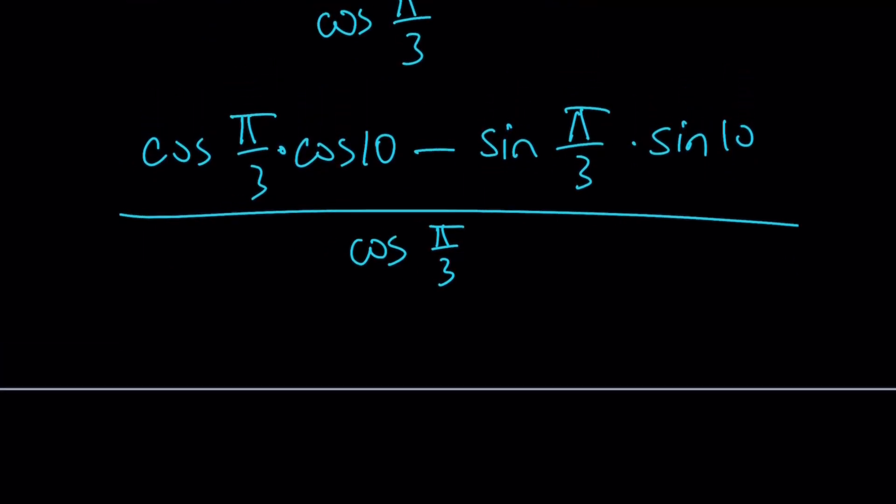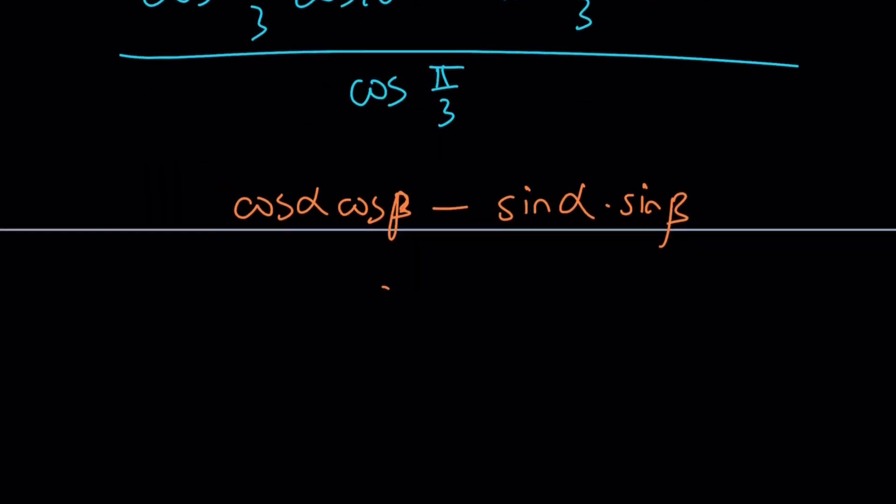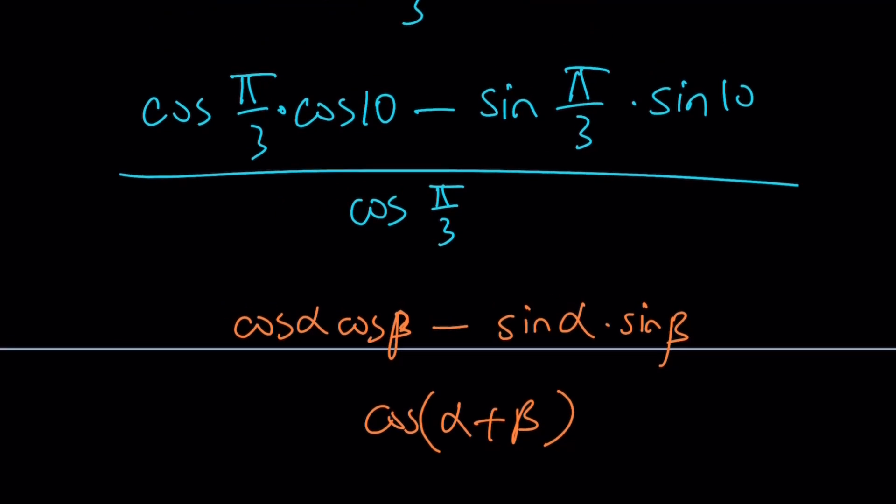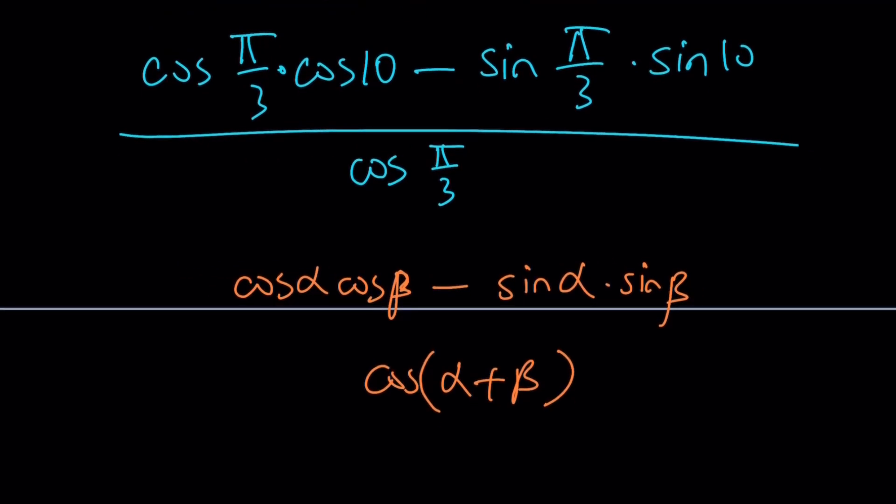Now, what does the top or the numerator remind you? What is the numerator? Doesn't that look like cosine alpha, cosine beta, minus sine alpha, sine beta? And if you said cosine of alpha plus beta for this, you're totally right about that. Yes, that's what it is. The sum formula for cosine. You should memorize these if you're doing trigonometry. They're not too hard.